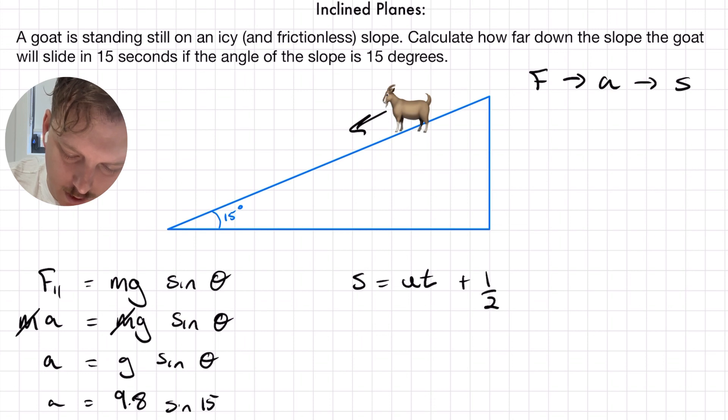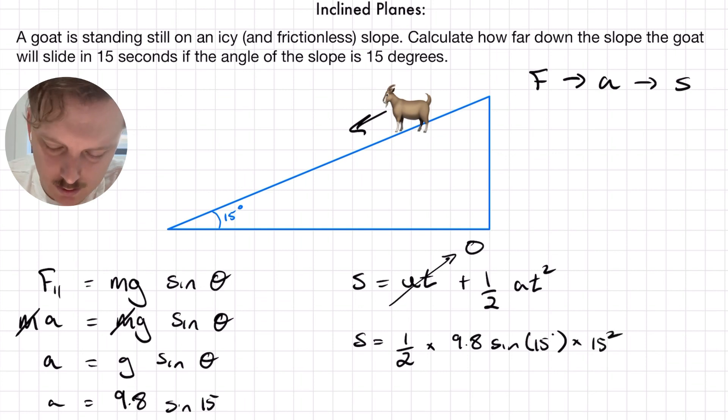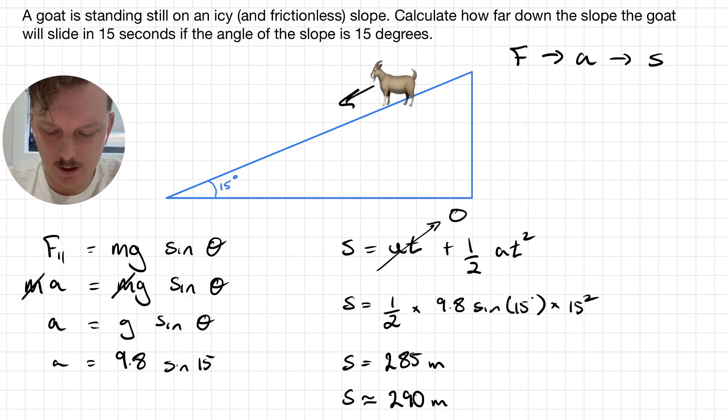We can then use that to figure out how far down the slope this goat will slide. So, s equals ut plus half at squared. We know that its initial velocity is 0, because it's standing still on this surface. So, our displacement is going to be half times 9.8 sine of 15 degrees, and I'm going to put that answer in off camera. So, that goat clearly hasn't had a very good time sliding 290 meters down the hill.